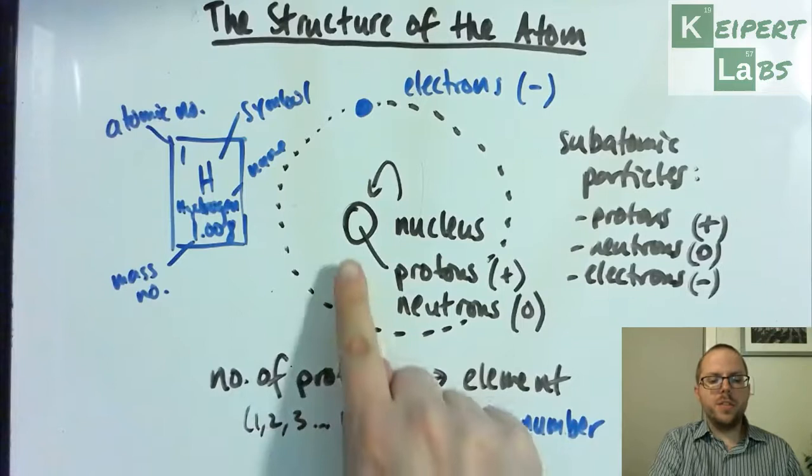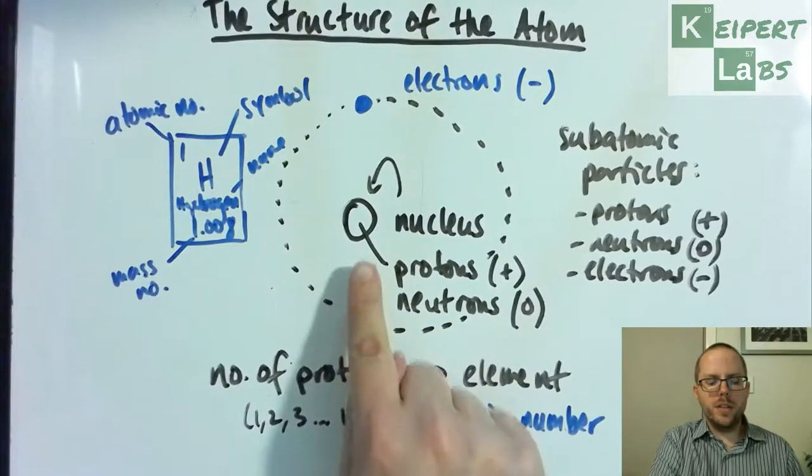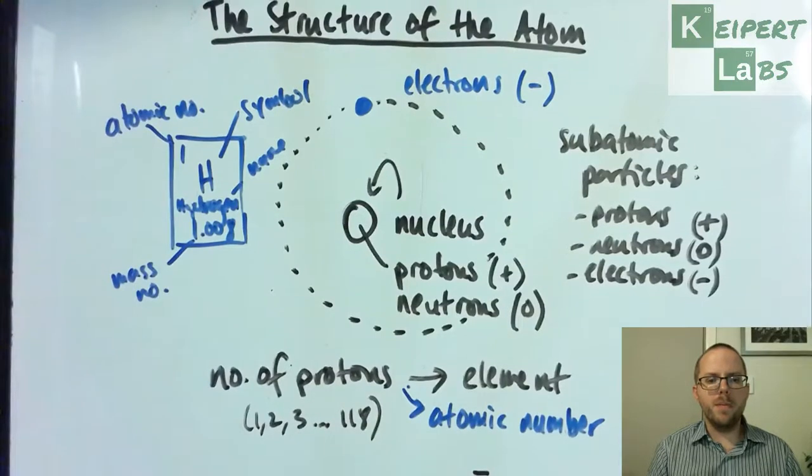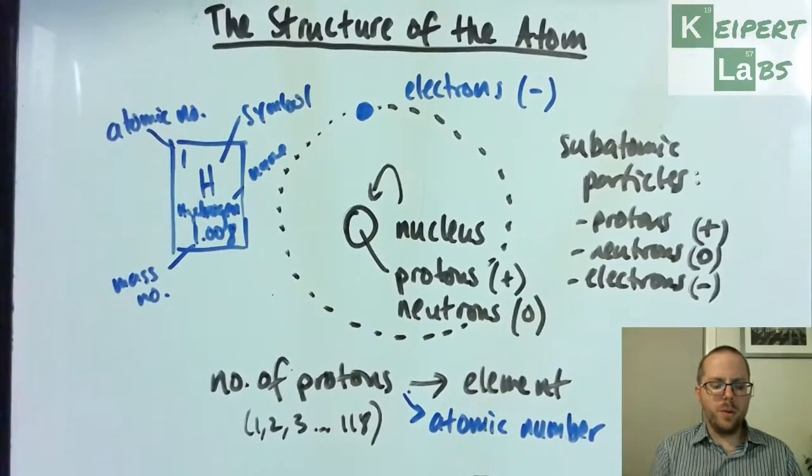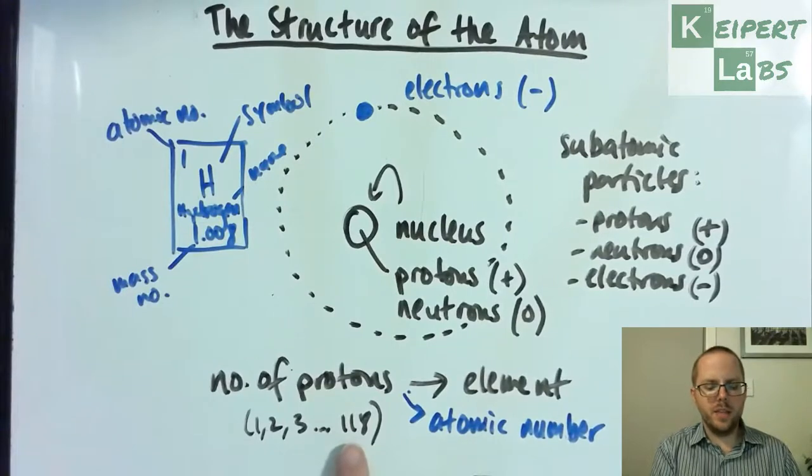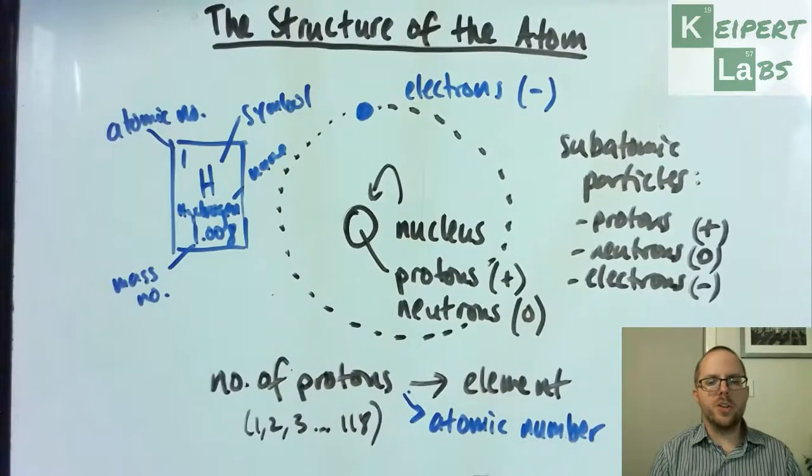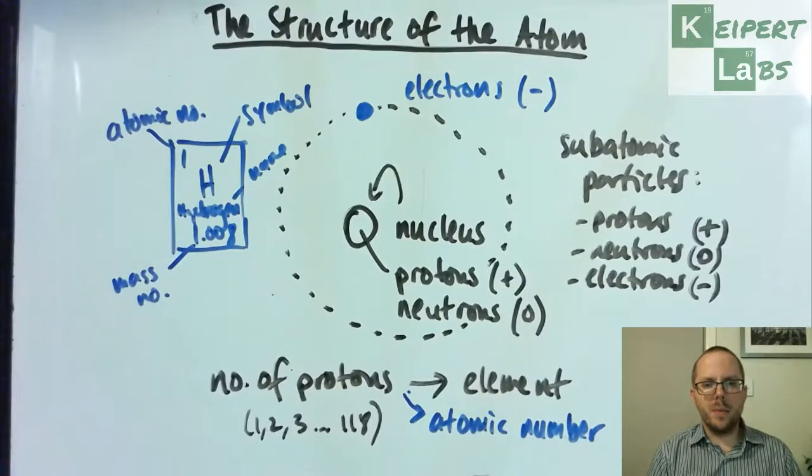The number of protons is really important in that nucleus—that helps us identify which element it is. We call it the atomic number for that element. It's a whole number from somewhere between 1 and 118 at this stage, and we can identify some of these key pieces of information in the squares on the periodic table. All right, thanks very much for watching. Bye for now.